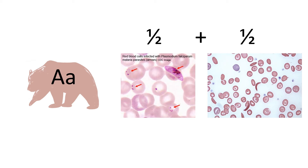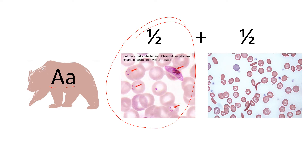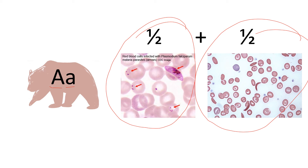Baby Bear here has one wild type and one mutated allele for hemoglobin. So half of the hemoglobin that Baby Bear produces is going to be healthy, and the other half is going to be sickled but resistant to malaria. This is just right for natural selection.